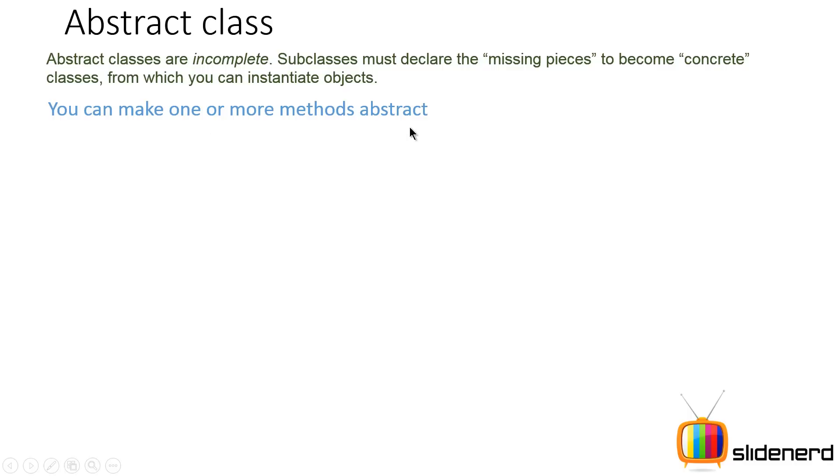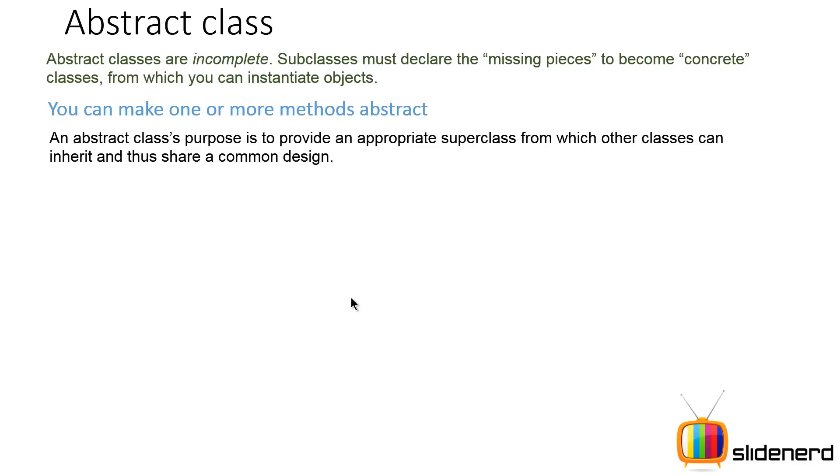So you can make one or more methods abstract inside a particular class. So even if you make a single method abstract, the class itself must be declared as an abstract class just like you saw in the last slide.